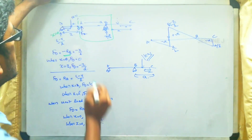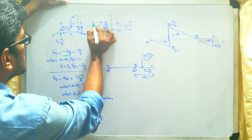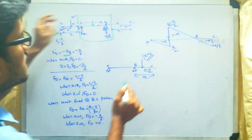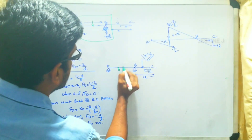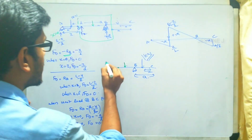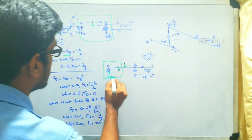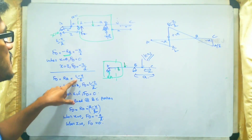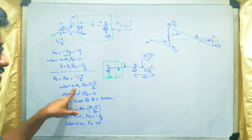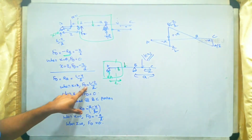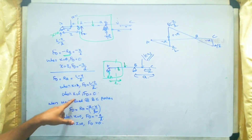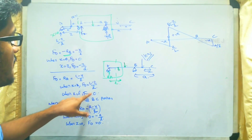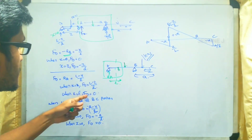When the load moves past D to between D and B, taking the left portion, only RA acts, so FD equals RA equals (L minus x)/L. When x equals Z, FD equals (L minus Z)/L (positive value). When x equals L, FD equals 0.